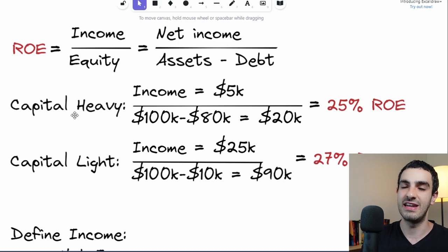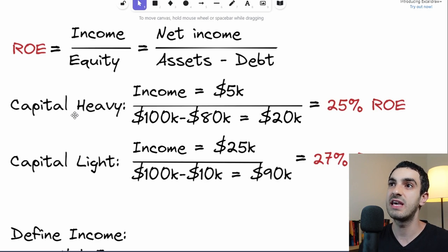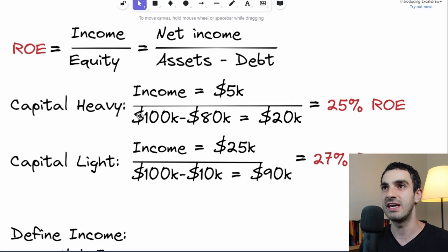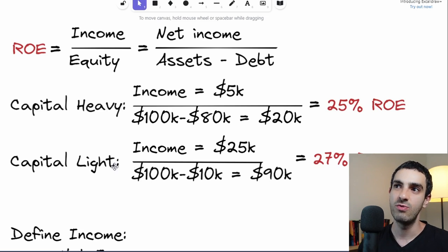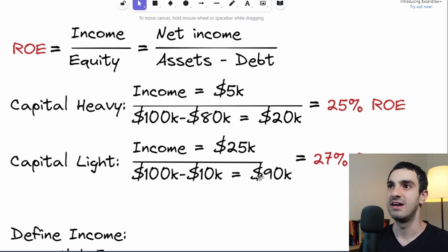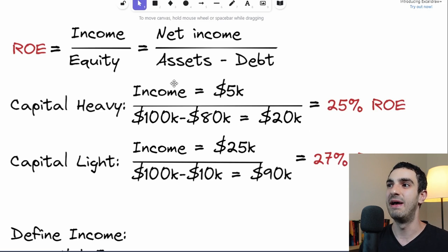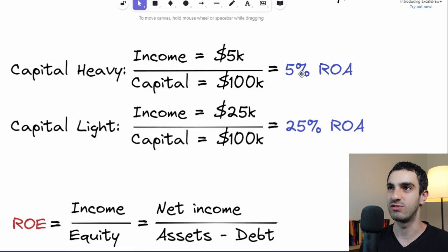For that reason we have Return on Equity, which is similar to Return on Assets but removes the debt from the denominator. In the capital-heavy example, the company got eighty thousand dollars in loans against one hundred thousand dollars in assets, leaving twenty thousand dollars in equity. With the same five thousand dollars in income, the Return on Equity is now 25%. In the capital-light case, only ten thousand dollars in debt was available, leaving ninety thousand dollars in equity and generating a twenty-seven percent Return on Equity.